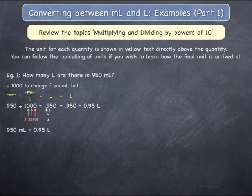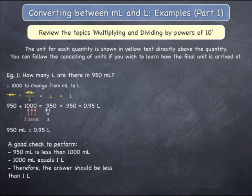A good final check to perform is to look at your starting quantity of 950 milliliters, which is less than 1000 milliliters. 1000 milliliters equals 1 litre, and therefore you expect an answer that is less than 1 litre.